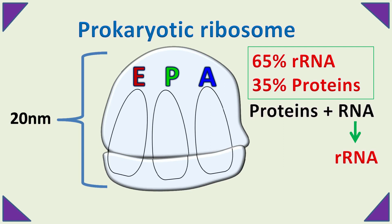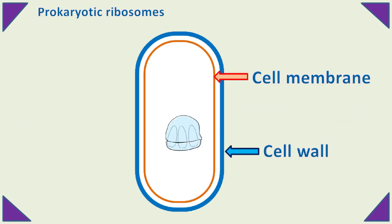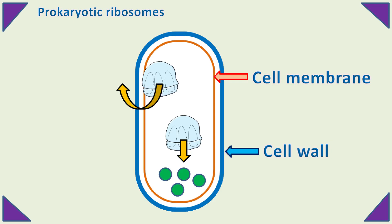In prokaryotes, the ribosomes can be associated with the cell membrane or can be present freely in the cytoplasm. The ribosomes present in the cytoplasm make cytoplasmic proteins, whereas the ribosomes associated with the cell membrane make proteins that are transported outside the cell.